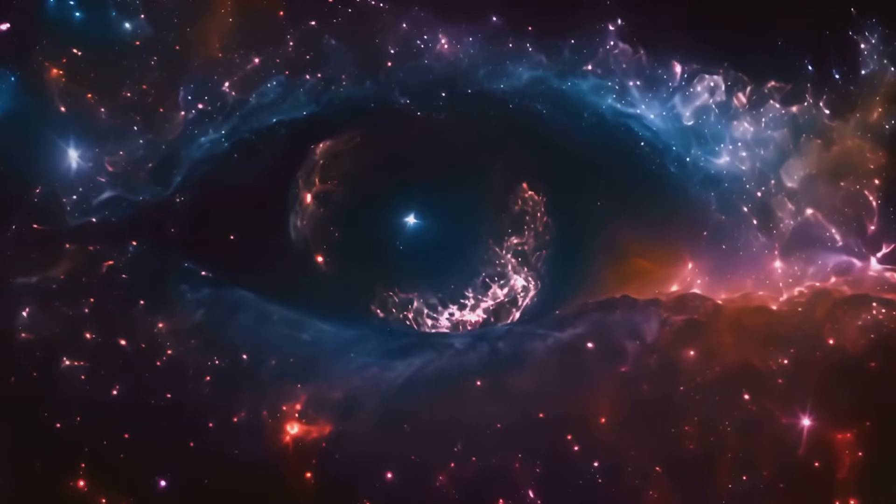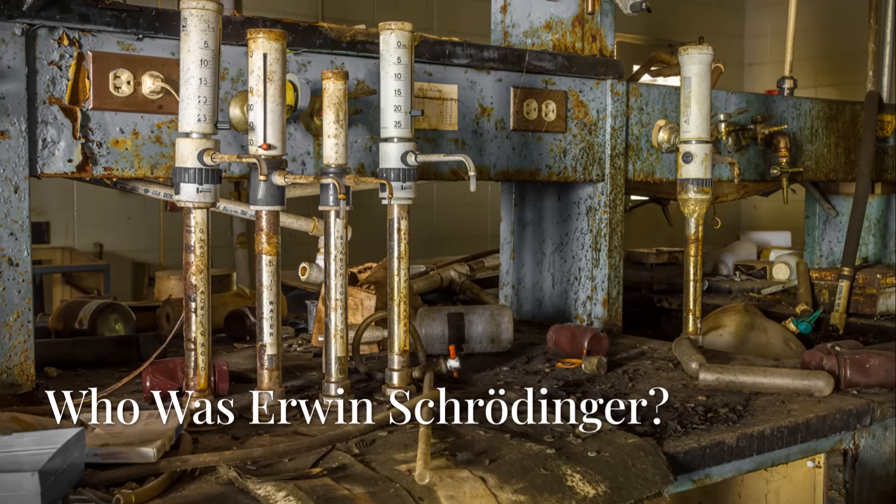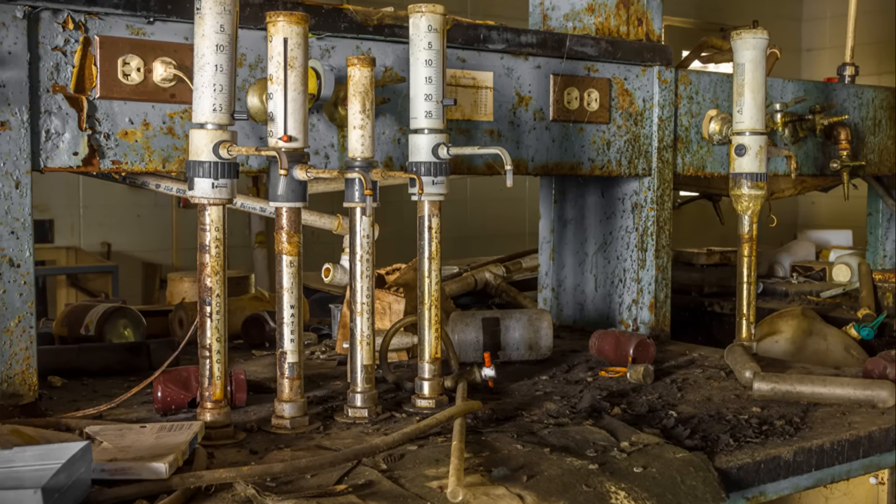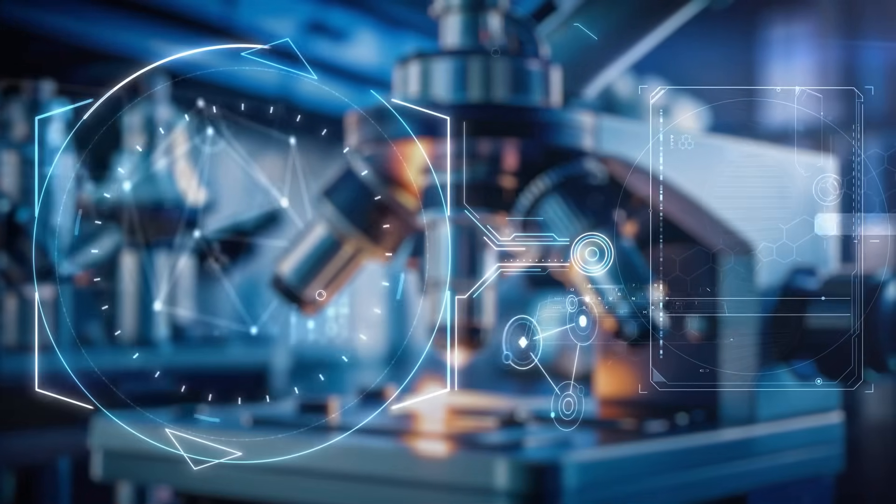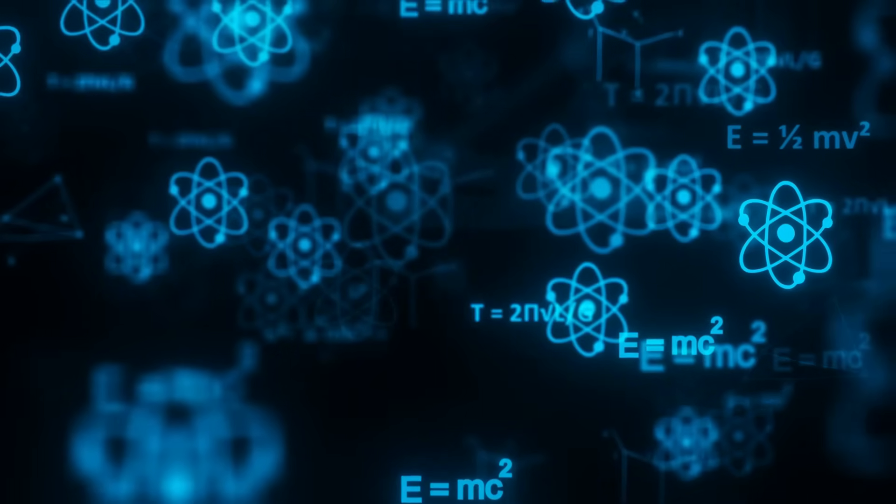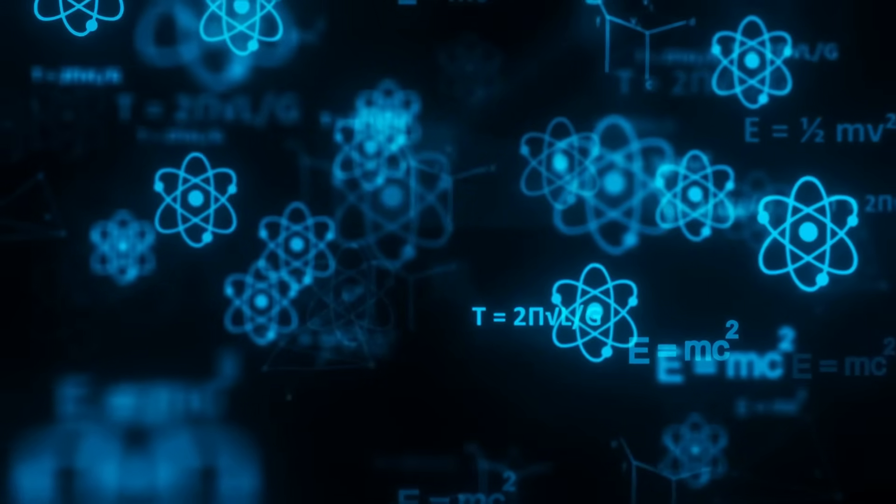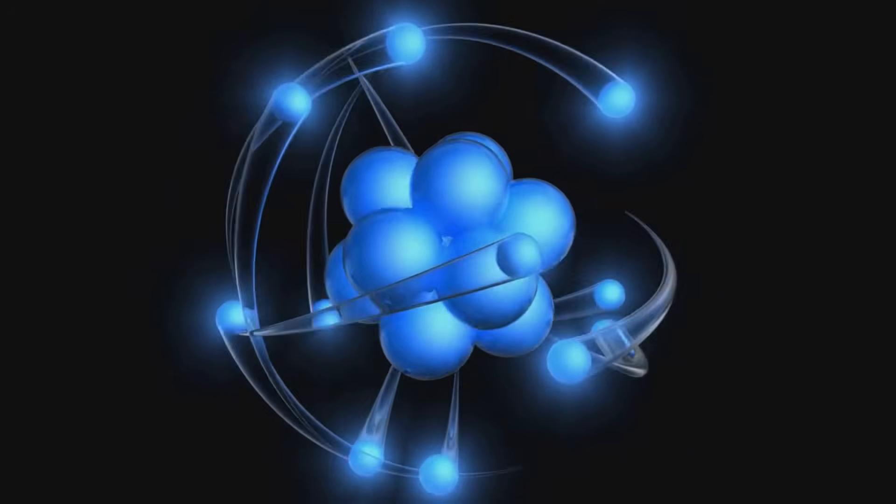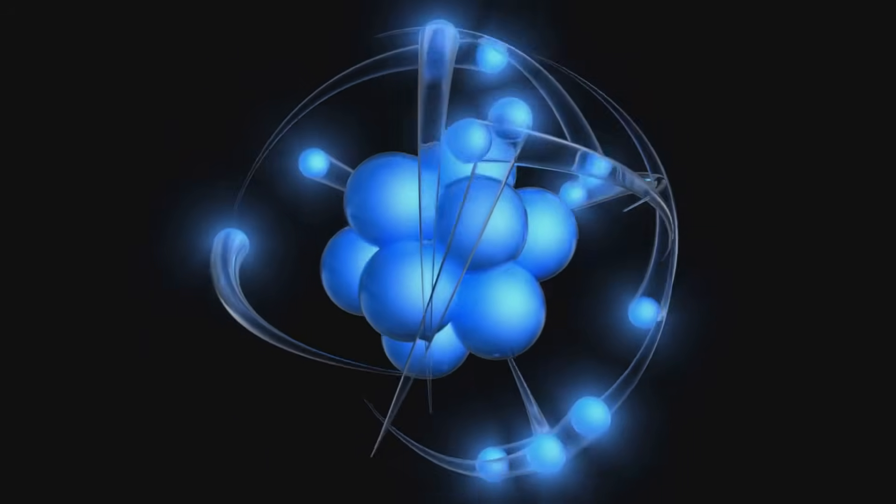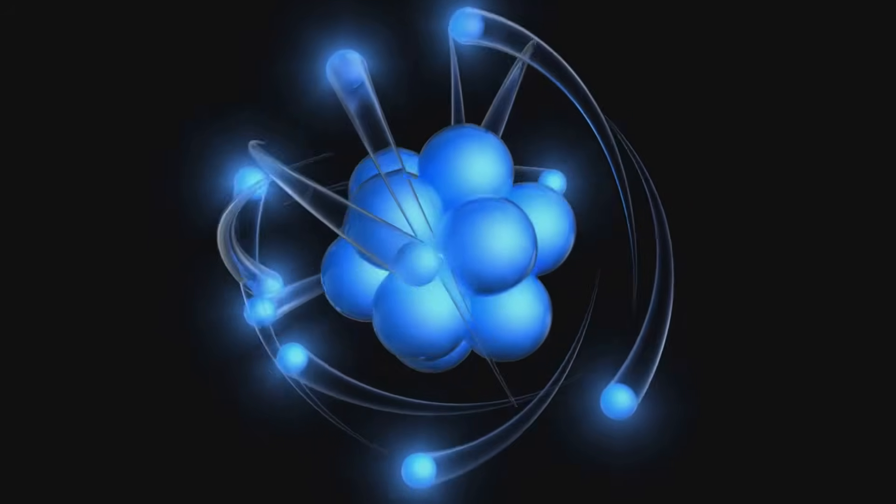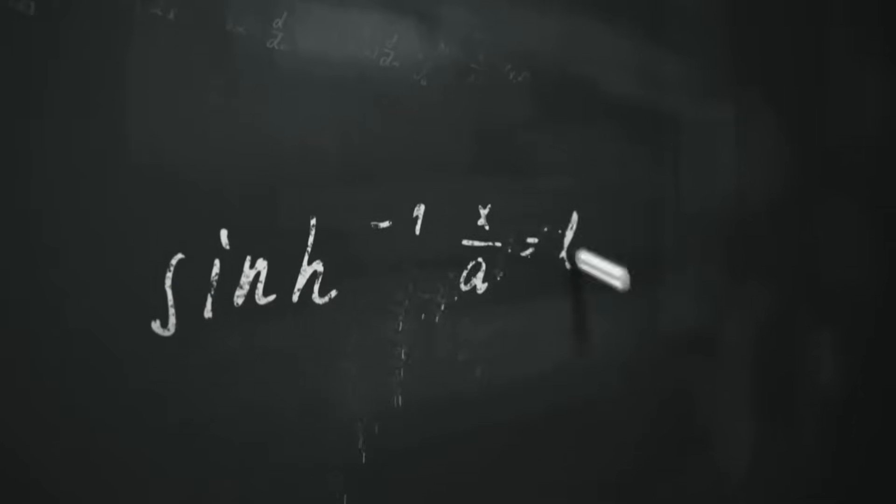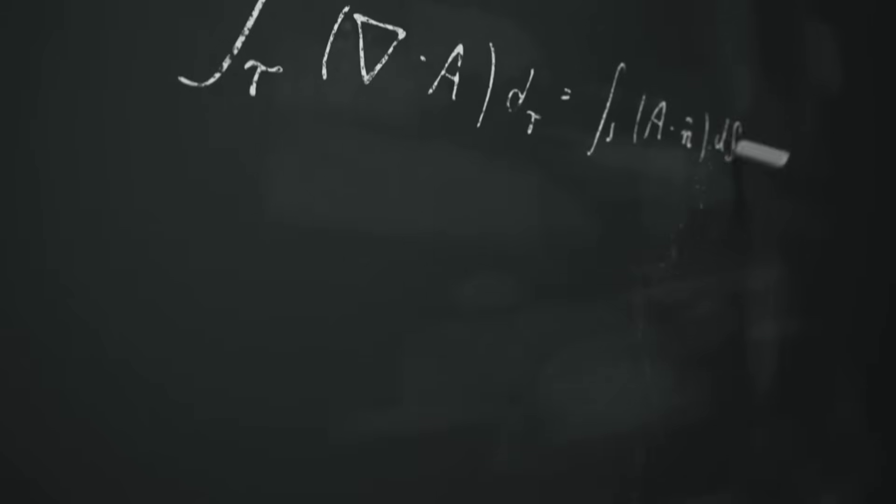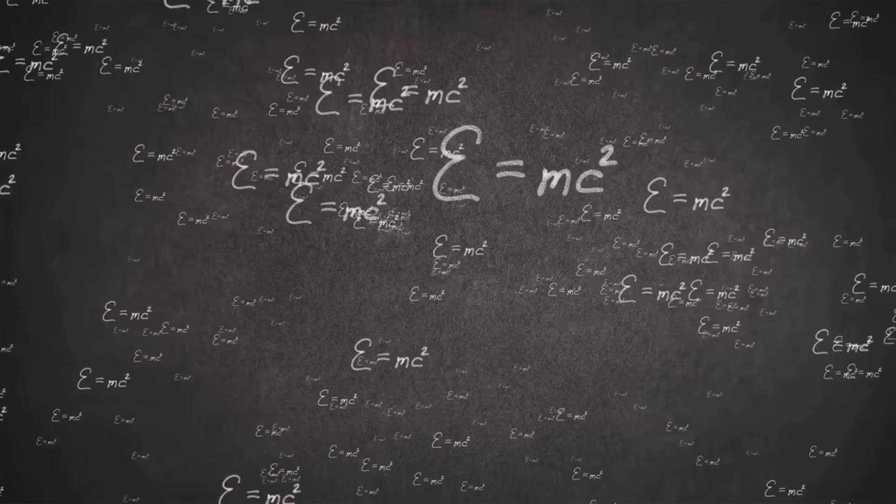Erwin Schrödinger, born in 1887 and passed away in 1961, was an Austrian physicist and Nobel laureate renowned for his contributions to quantum mechanics, the branch of physics governing the behavior of particles at atomic and subatomic scales. His most famous work, the Schrödinger Equation, describes how quantum systems evolve over time, forming the backbone of quantum theory.